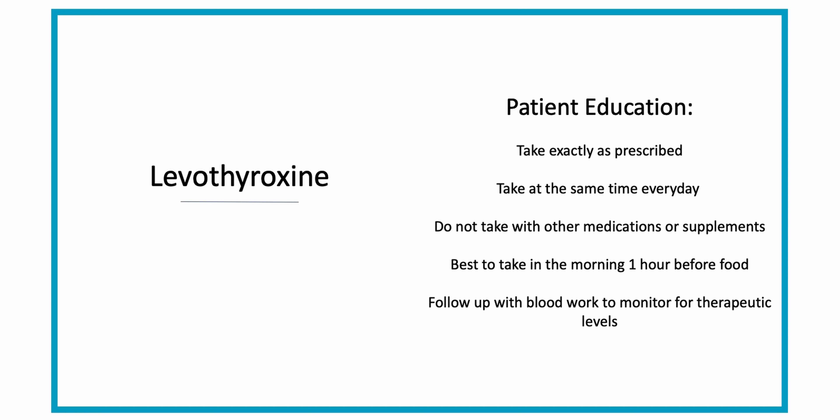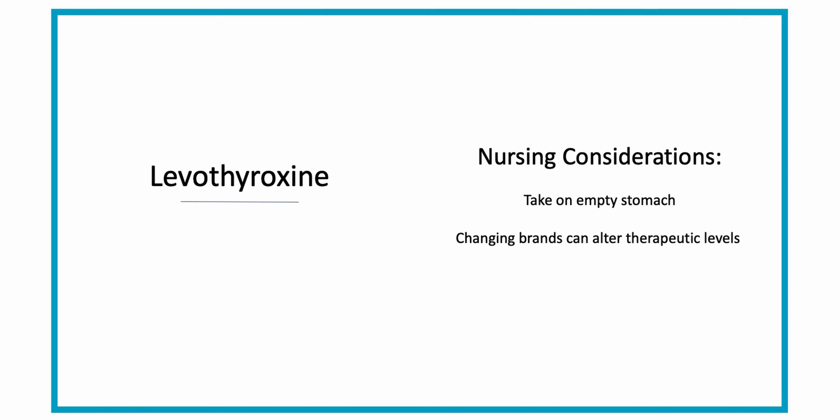The best time to take it would be one hour before a meal — it's usually recommended to take it first thing in the morning before breakfast. Educate your patient on the importance of follow-up labs to monitor for therapeutic levels. When changing brands of the medication, it can take up to 8 to 12 weeks for the hormones to balance out and to accurately evaluate a therapeutic level.